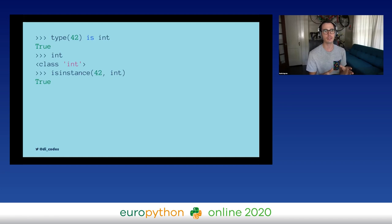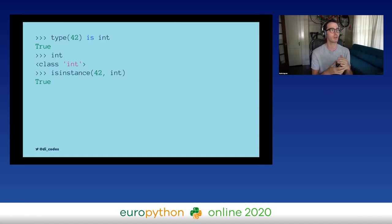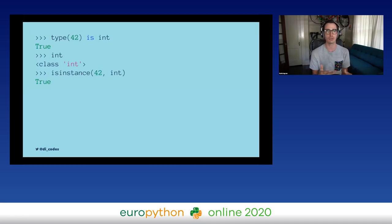These types are actually just classes that happen to have corresponding built-ins in Python. It's kind of just doing class matching — we can say whether the number 42 is an instance of the class `int`, and when we call `type`, it gives us that same class back. It's sort of just a class, a shortcut or alias for that class name.